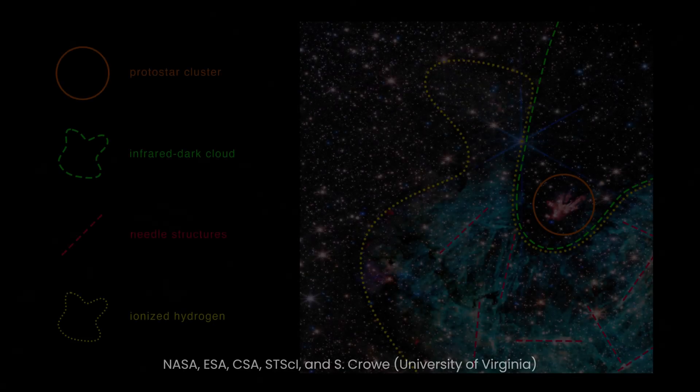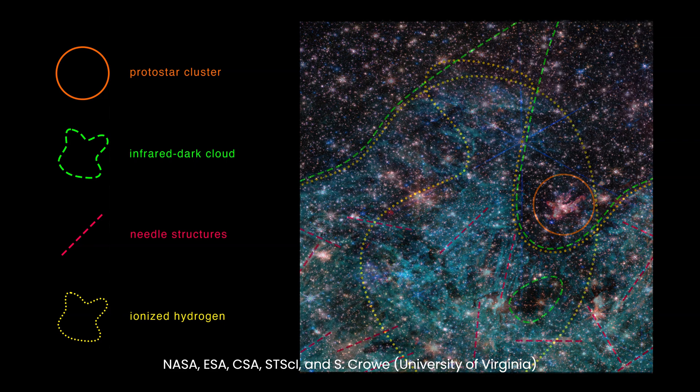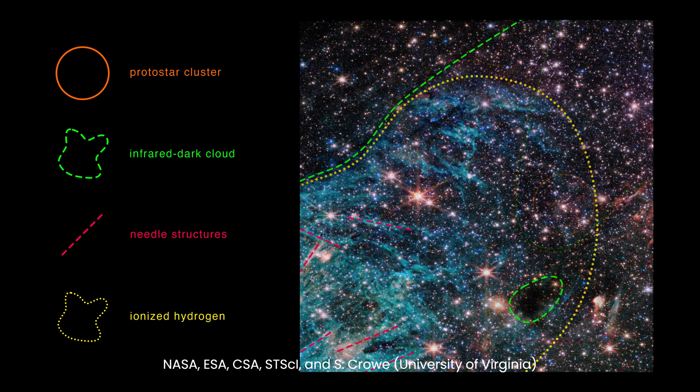A large, bright cyan-colored area surrounds the lower portion of the dark funnel, forming a rough U-shape with needle-like linear structures. The right side of the image is dominated by clouds of orange and red, accompanied by a purple haze.